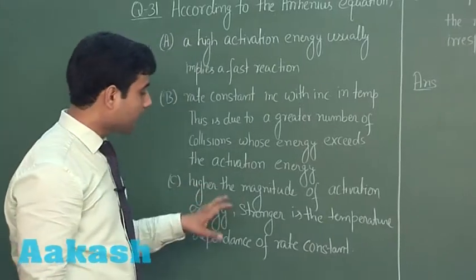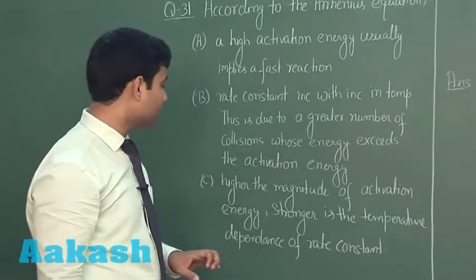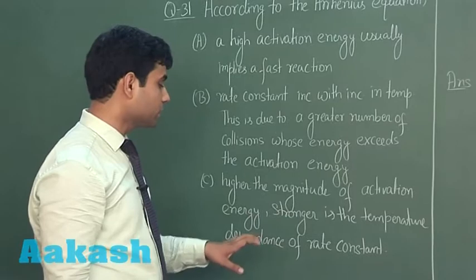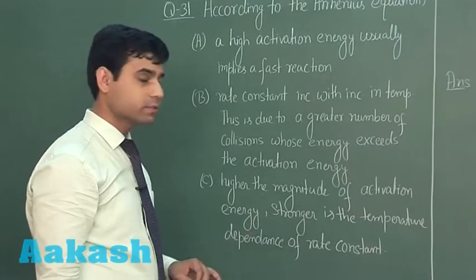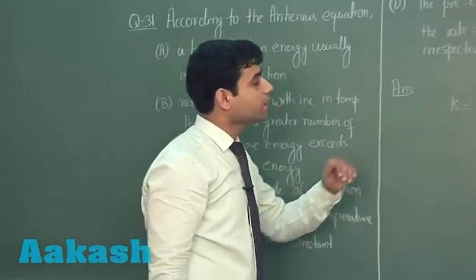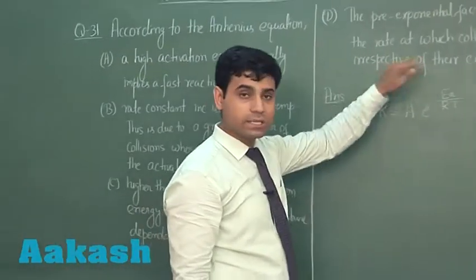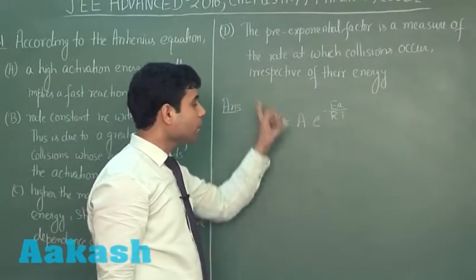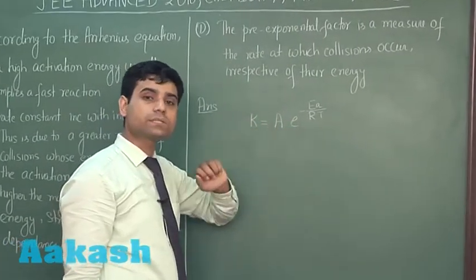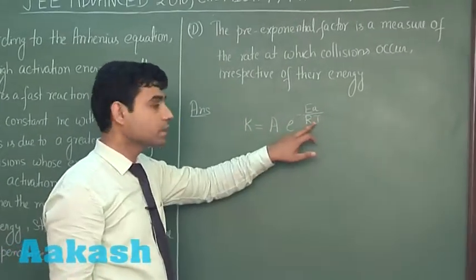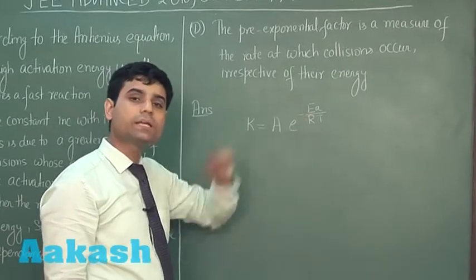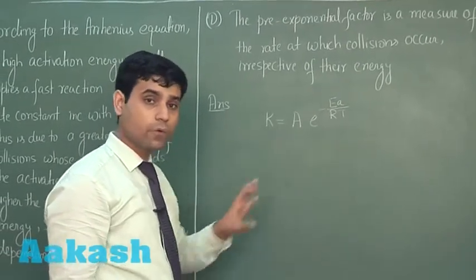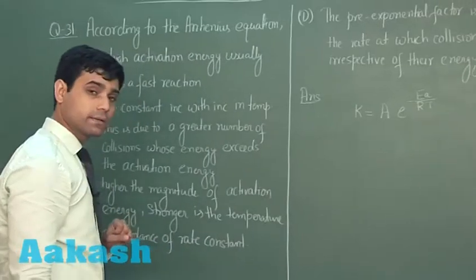When we have a higher value of activation energy, the rate constant will increase faster with the increase in temperature because Ea is higher. Therefore, this option is also correct.